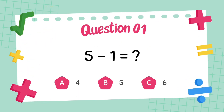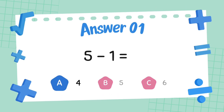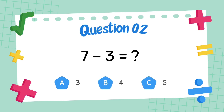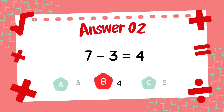What is 5 minus 1? The answer is 4. What is 7 minus 3? The answer is 4.